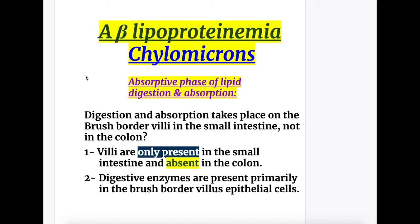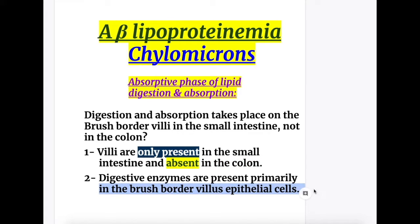A-beta lipoproteinemia involves the absorptive phase of lipid digestion and absorption in which chylomicron formation occurs. Digestion and absorption takes place on the brush border villi in the small intestine, not in the colon. This is because villi are only present in the small intestine and absent in the colon, and digestive enzymes are present primarily in the brush border villus epithelial cells.